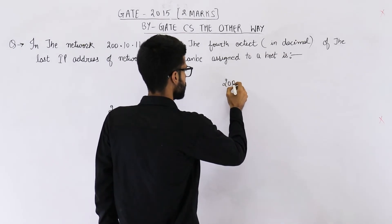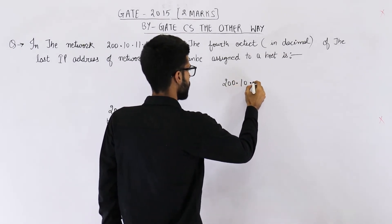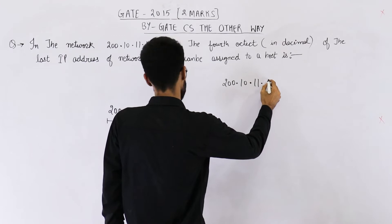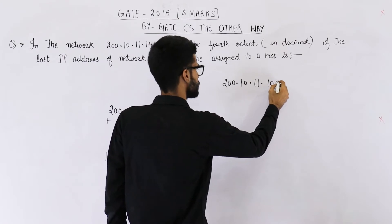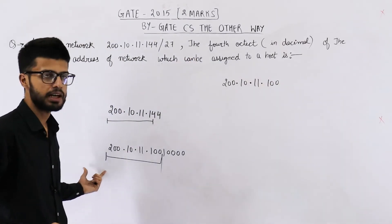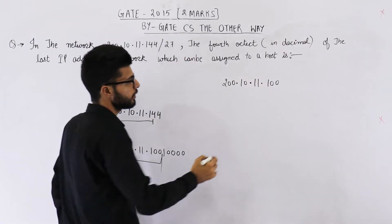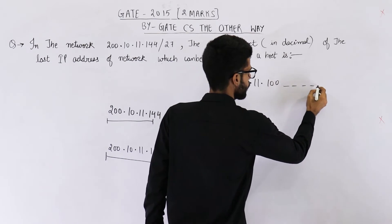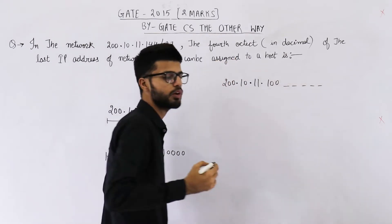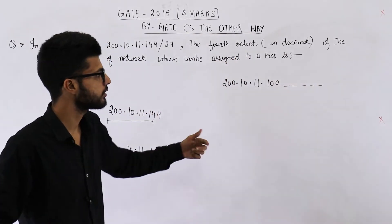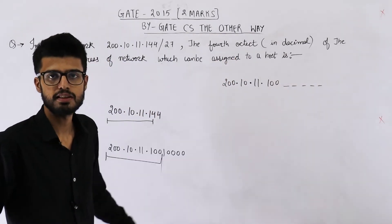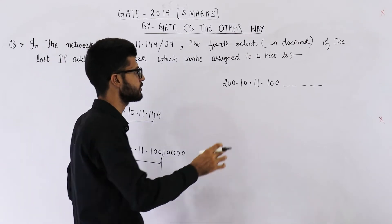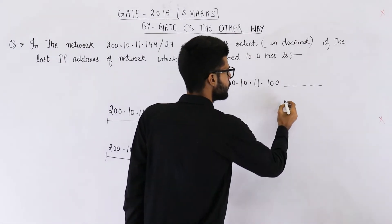In 200.10.11, up to the first three bits of the fourth octet we have the network ID. Then the remaining 5 bits are the host ID. Just keep on changing these values to get the various IP addresses which belong to this network.